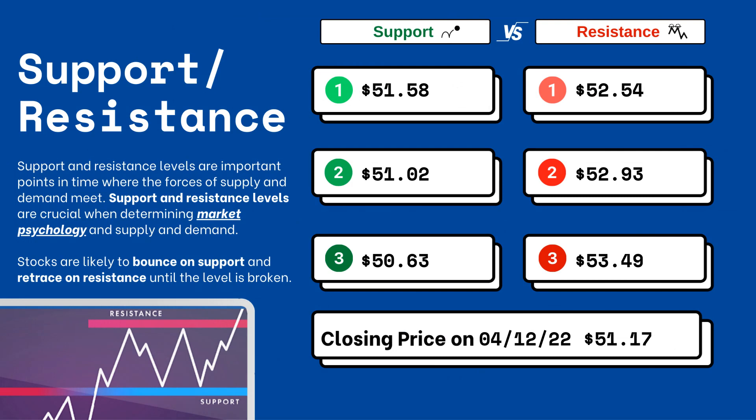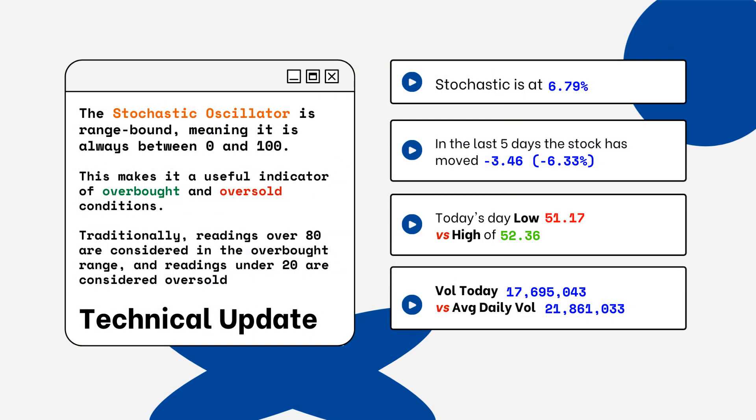On the right side you'll see three support levels and also three resistance levels. These are areas that you want to watch when looking at this particular stock. Stocks typically bounce at support levels and resist at resistance levels, meaning they'll retrace from that top level.